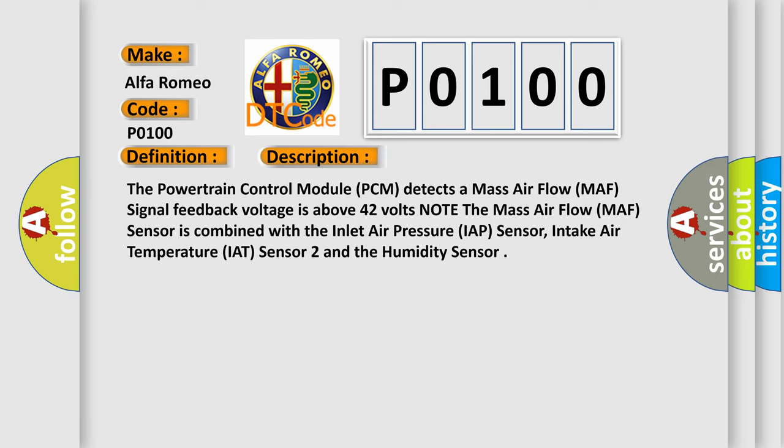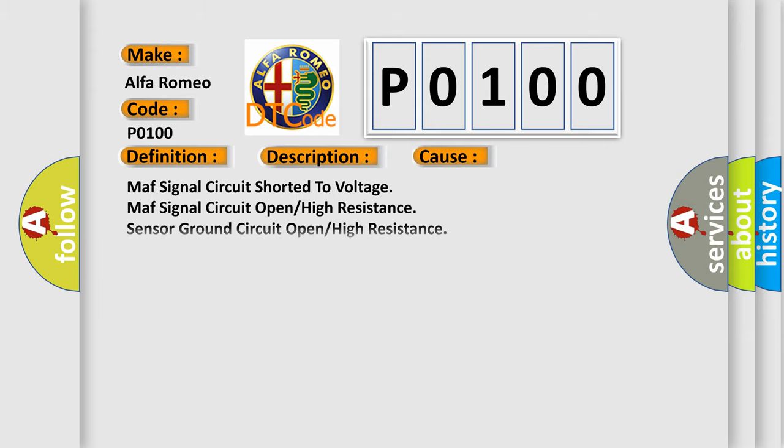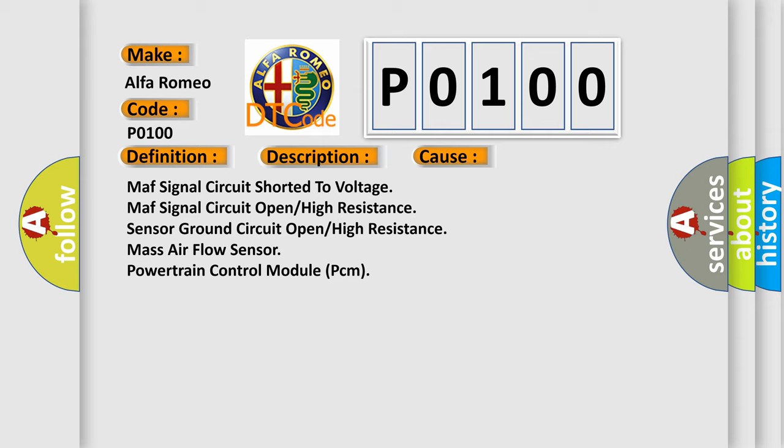Note the mass airflow MAF sensor is combined with the inlet air pressure IAP sensor, intake air temperature IAT sensor 2, and the humidity sensor. This diagnostic error occurs most often in these cases: MAF signal circuit shorted to voltage, MAF signal circuit open, high resistance sensor ground circuit open, high resistance mass airflow sensor, powertrain control module PCM.